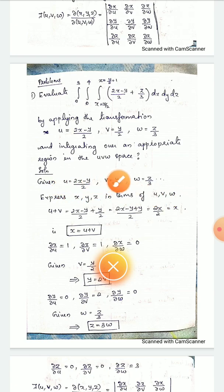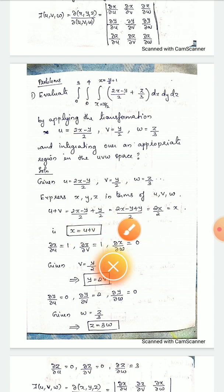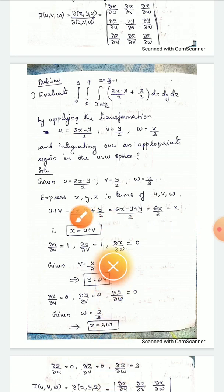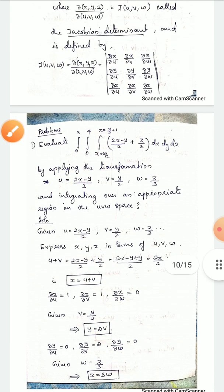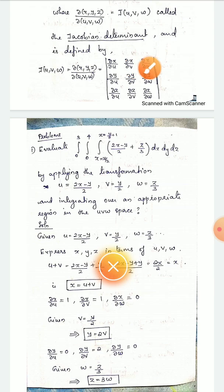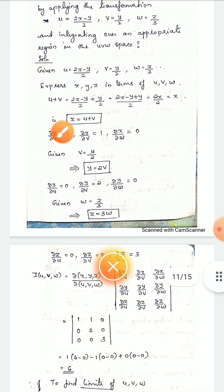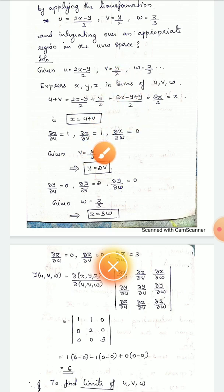From the transformation: u = 2x − y/2 and v = y/2, so u + v = 2x − y/2 + y/2 = x. Therefore x = u + v. So ∂x/∂u = 1, ∂x/∂v = 1, and ∂x/∂w = 0 since w does not appear in x. Given v = y/2, that means y = 2v. So the derivatives of y: ∂y/∂u = 0, ∂y/∂v = 2, ∂y/∂w = 0.